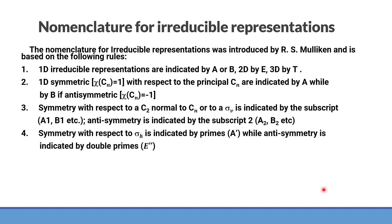Symmetry with respect to sigma h is indicated by primes A prime while anti-symmetry is indicated by E double prime. Symmetry with respect to center of inversion I is indicated by G, that is EG or anti-symmetry is indicated by U, gerade or ungerade. So it is AG, EG, AU, BU, etc.